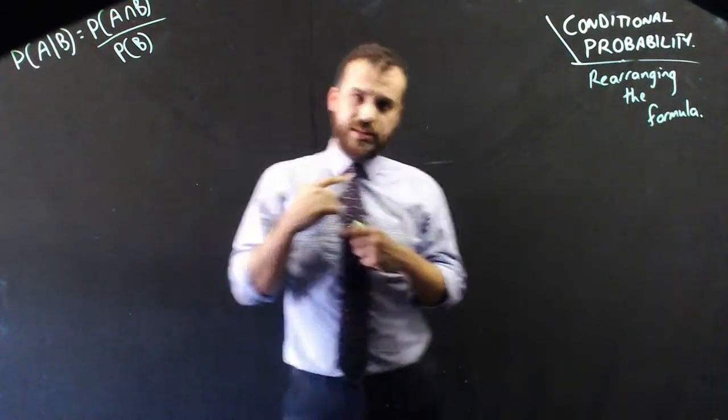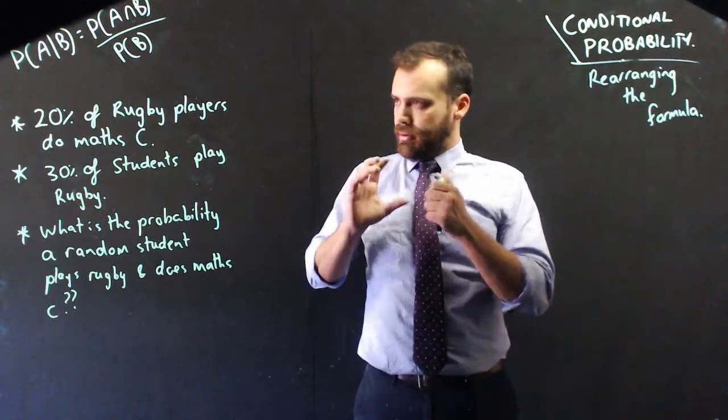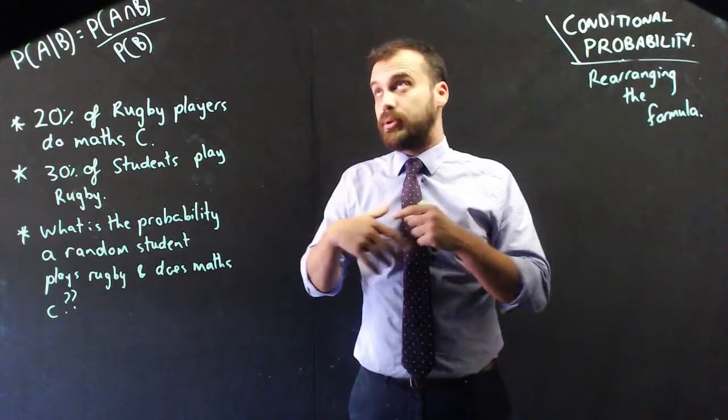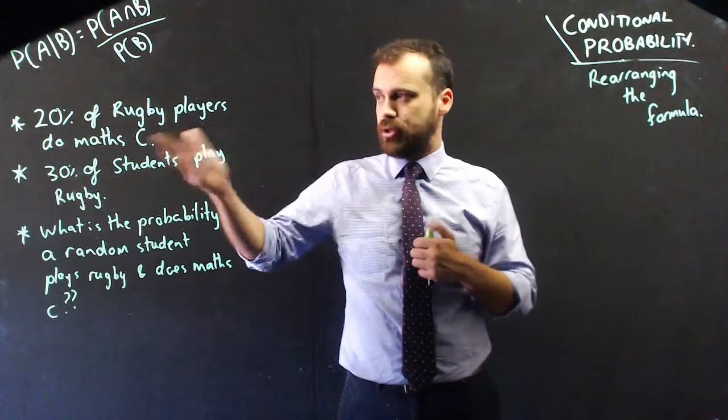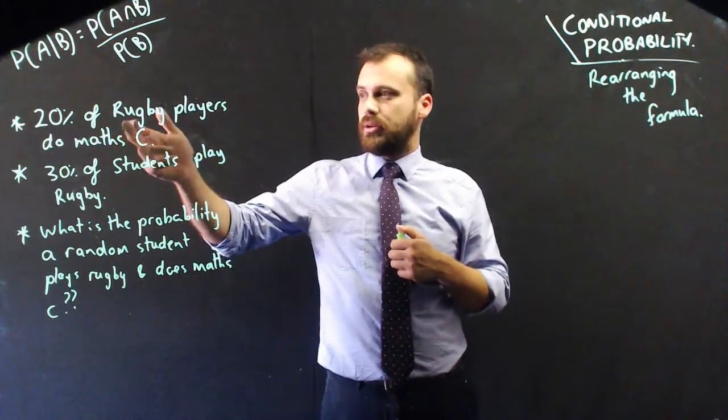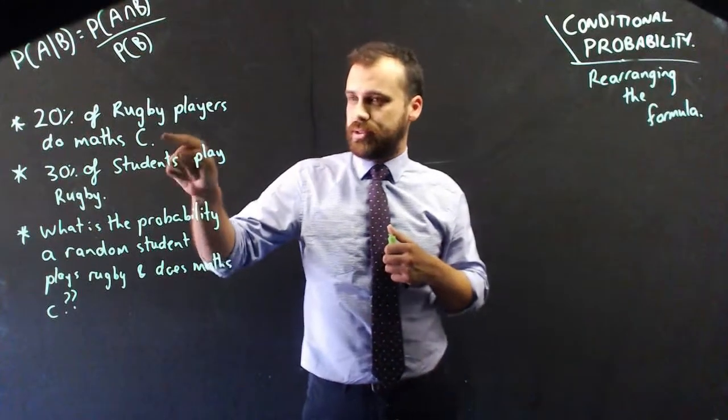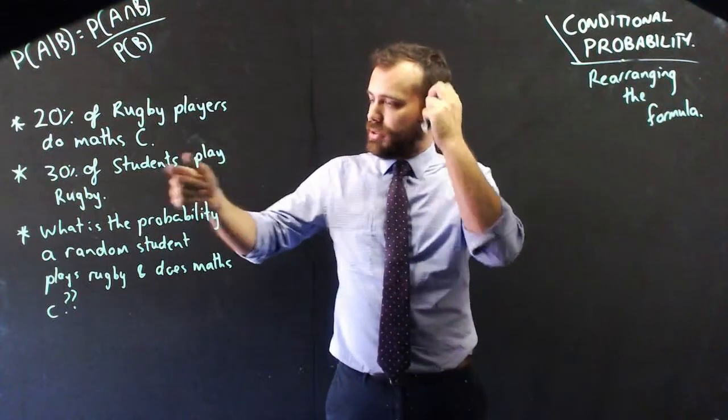So, an example. Read this one here. Pause it if you like. But basically, I went to a rugby game, or a rugby day, and I said to all the players, how many of you do Math C? And it turned out that 20% of them did Math C. Now, that's given. That's doing Math C, given I already knew that they were rugby players, because they were wearing a rugby jersey.